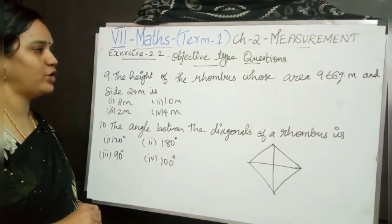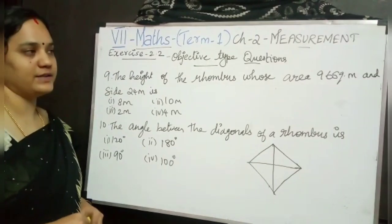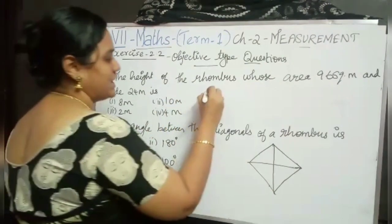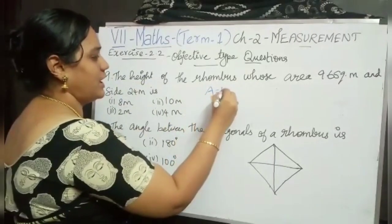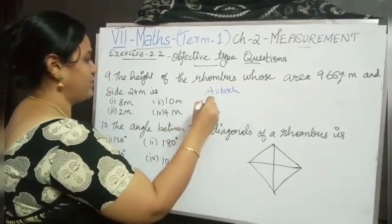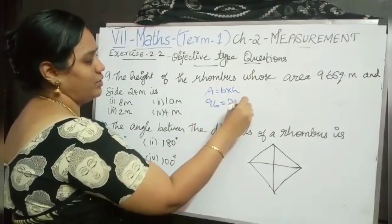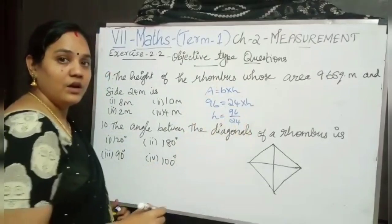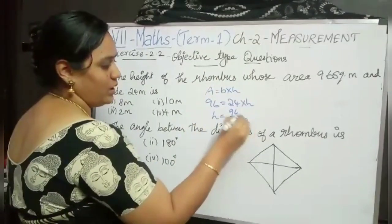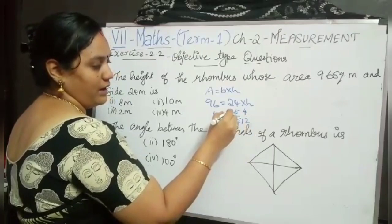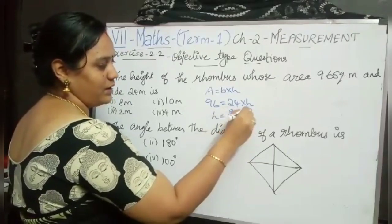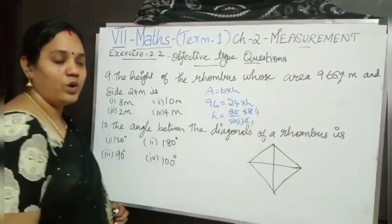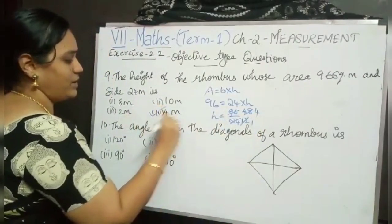The 9th problem: the height of the rhombus whose area is 96 square centimetre and side is 24 metre. Area is given and one side is given — we have to find out the height. Area equals base into height, so 96 equals 24 into H. H equals 96 divided by 24. Cancelling using 2 table: so my answer is 4 metre.